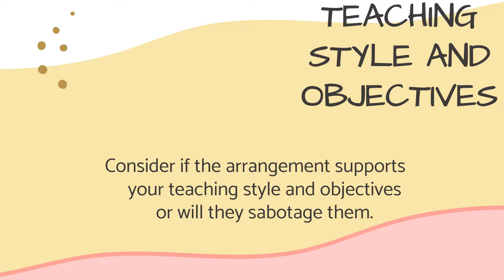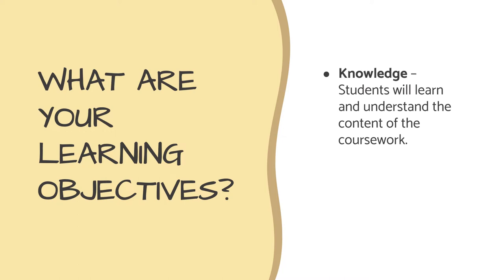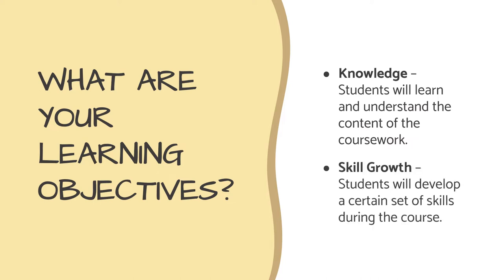Teaching style and objectives: Consider if the arrangement supports your teaching style and objectives, or will they sabotage them? Think about who you want to be the focus of the class — will it be teacher-centered, student-centered, or both? This is a good time to refer back to your responses in Module 1. What are your learning objectives? Is it knowledge — students will learn and understand the course content — or skill growth — students will develop a certain set of skills? Acquiring knowledge will require more focus and independent work, which suits rows. For skills requiring cooperation, communication, and teamwork, group layouts work well.